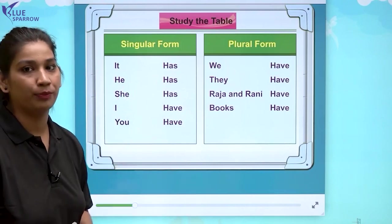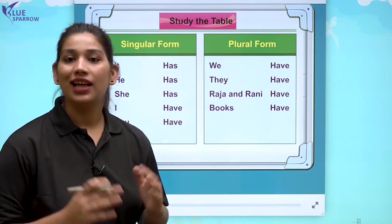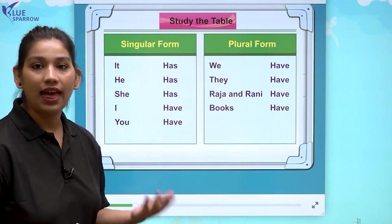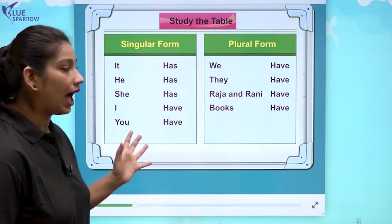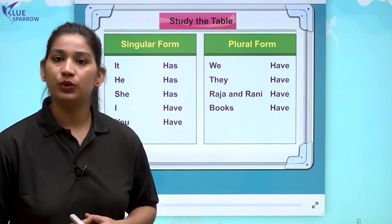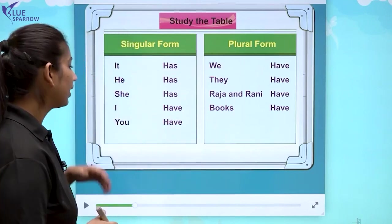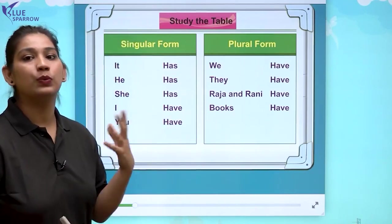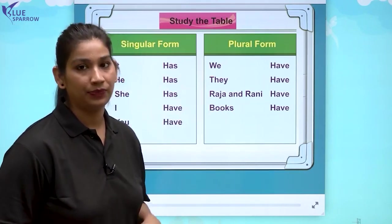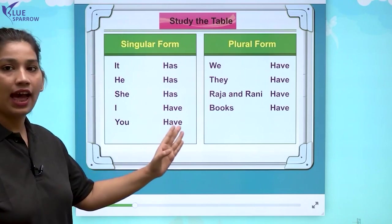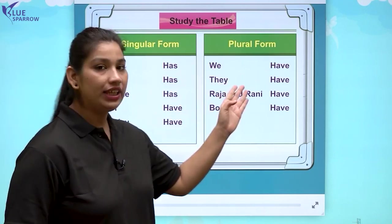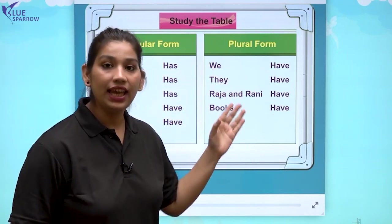Now comes the plural form. Plural form ke saath hum have ka use karte hai. Koi bhi cheez jab more than one in number hooti hai, tab have use hoga. And with words like I, you, we, they — you can see: I have, you have, we have, they have.